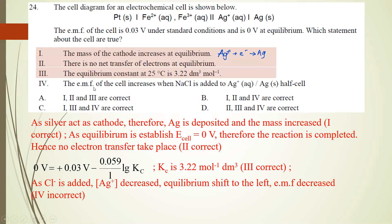For the last statement: EMF of the cell increases when you add NaCl. When you add NaCl, the Ag+ concentration decreases because Ag+ reacts with Cl- to form the white precipitate AgCl. When the concentration of Ag+ decreases, equilibrium shifts to the left, so the EMF of the cell will decrease instead of increase. So the best answer is 1, 2, and 3.